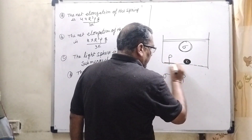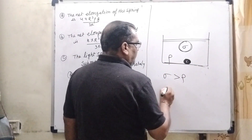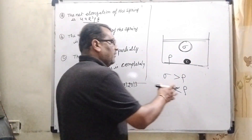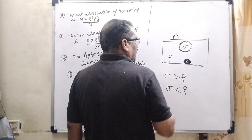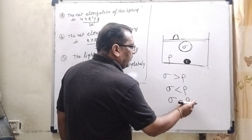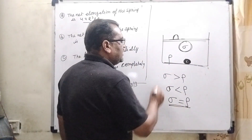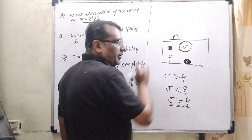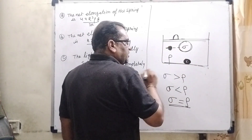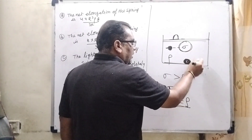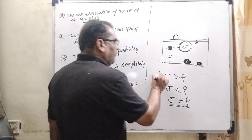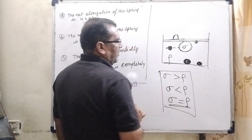The object settles at the bottom of the container. In the second case, if sigma is less than rho — density of solid less than density of liquid — the object floats to the upper surface. When sigma equals the density of the liquid, the system becomes homogeneous and the object remains wherever it is placed — whether at the top, bottom, or middle — but completely submerged.